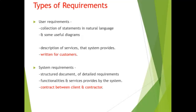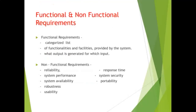The second requirement type is system requirements — a structured document of detailed requirements, functionalities and services provided by the system, forming a contract between client and contractor. These include functional and non-functional requirements. Functional requirements are a categorized list of functionalities and facilities provided by the system, specifying what output is generated for which input.